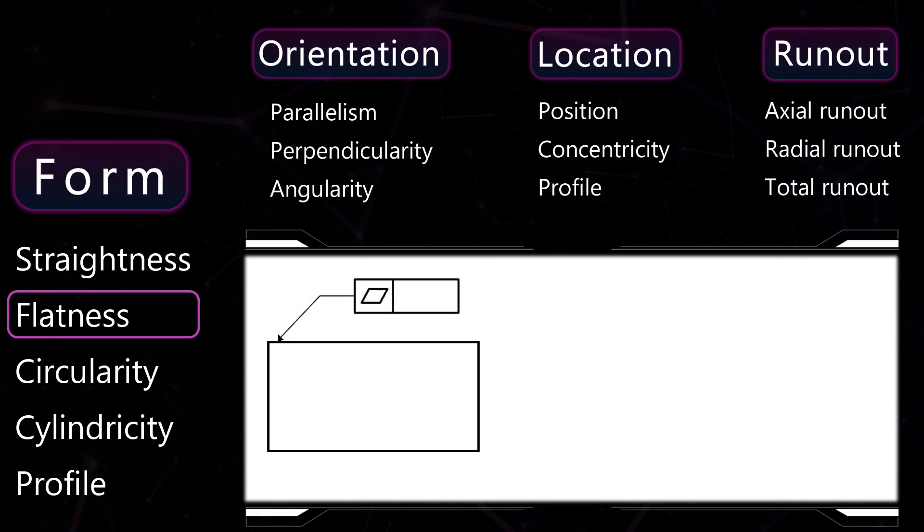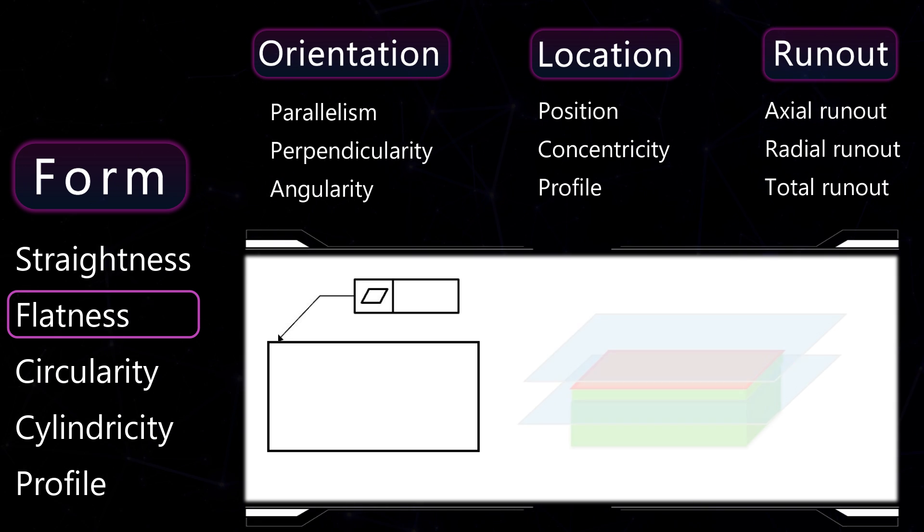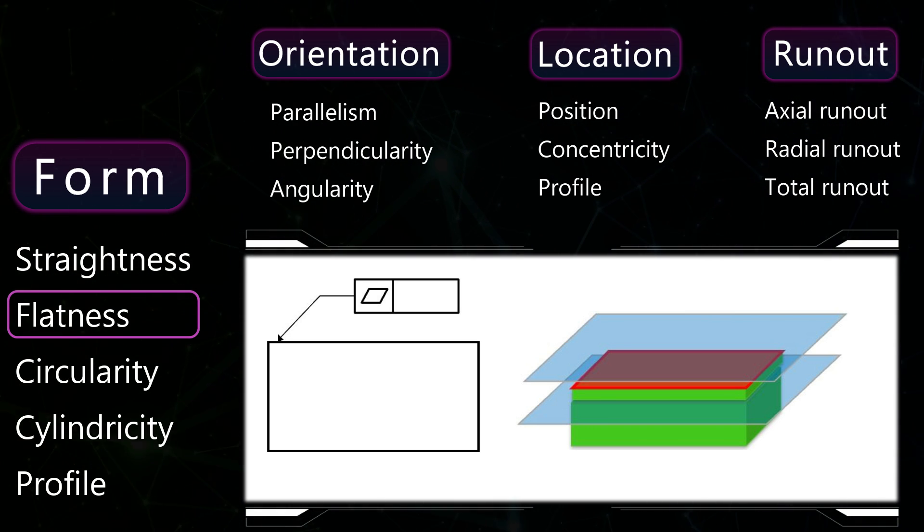Flatness. The tolerated surface should lie between two parallel surfaces. The distance between them is the value of the tolerance zone.